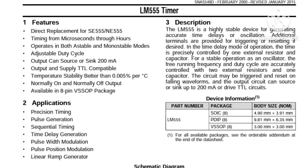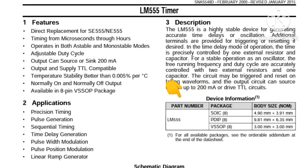Section three is the description of the IC, which describes the capability of the IC. As you can see here, it says the 555 timer is a highly stable device for generating accurate time delays or oscillations. We also have the device information, which shows in tabular form the part number, the package, and the body size of the IC.